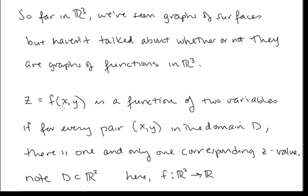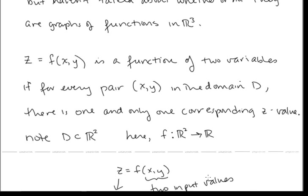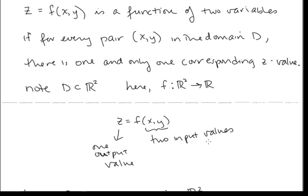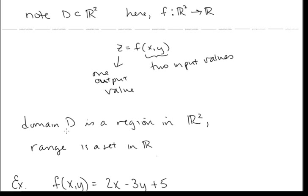Keep in mind that our domain is now a subset of two-dimensional space — a subset of the xy-plane. It's all the pairs (x, y) that can be put into the function f. So there are two input values and one output value. The domain is a region in R², and the range is a set in R.